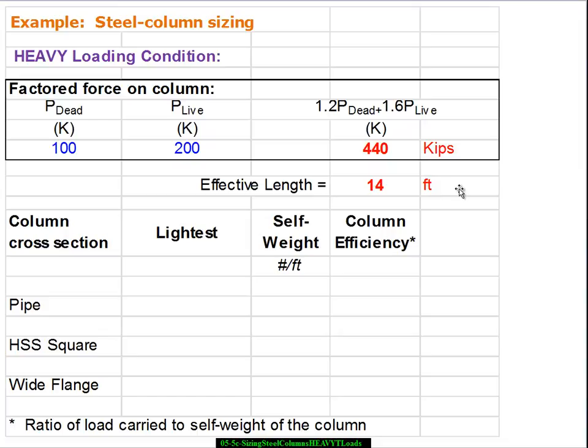The bracing of the column would occur essentially at every floor diaphragm. So here we have the column cross section, the general nomenclature for it: pipe, HSS square, wide flange.